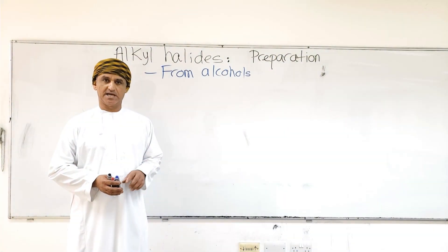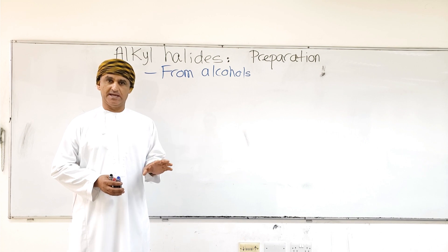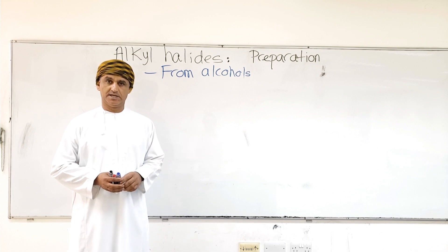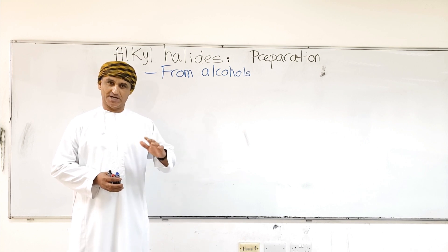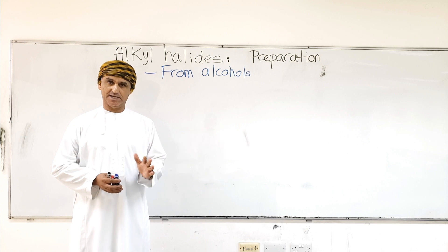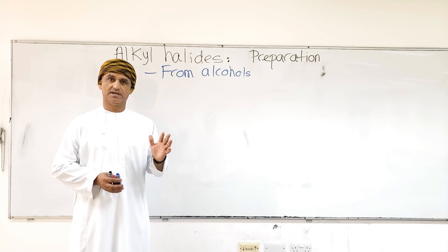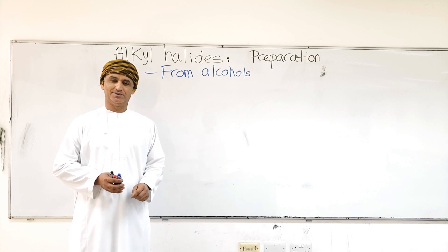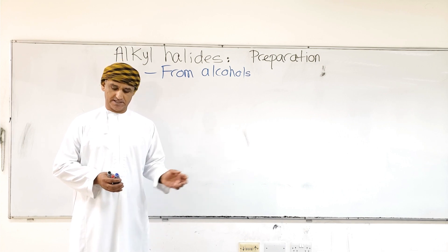Alkyl halides can also be made from alcohols, and alcohols are of different types. There are tertiary alcohols, secondary alcohols, and primary alcohols.